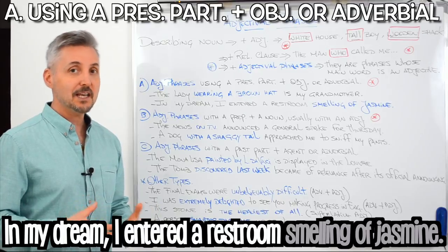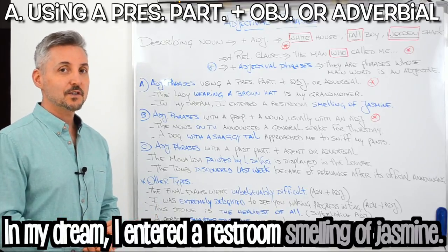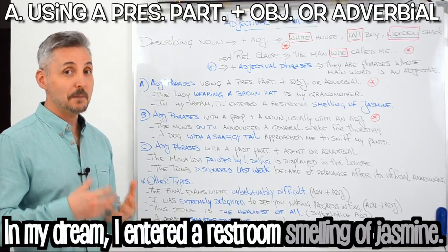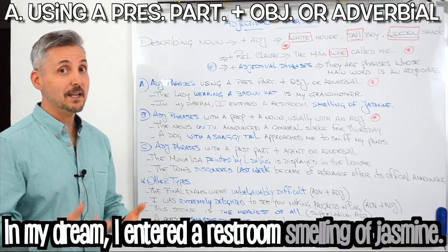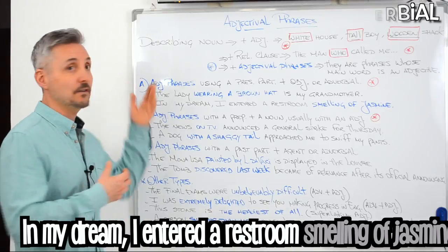Let's take a look at another example. In my dream, I entered a restroom smelling of jasmine. Which restroom? The one smelling of jasmine. Jasmine is a flower. So, smelling of jasmine is the adjectival phrase.